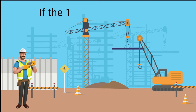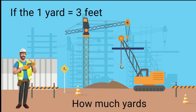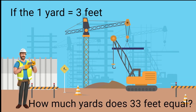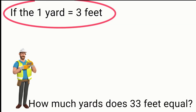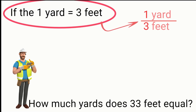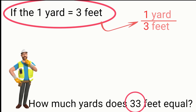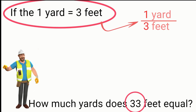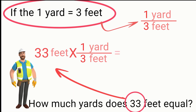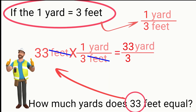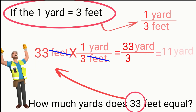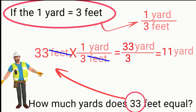If one yard equals three feet, how many yards does 33 feet equal? Our conversion factor is one over three, so we will take 33 feet and multiply it by the conversion factor. So 33 feet equals 11 yards.